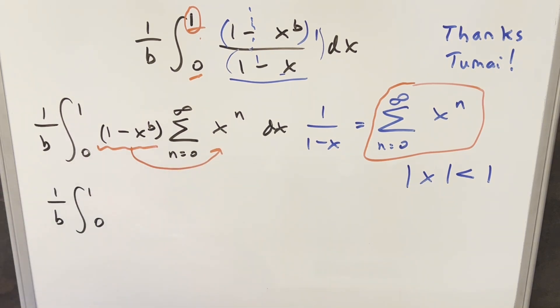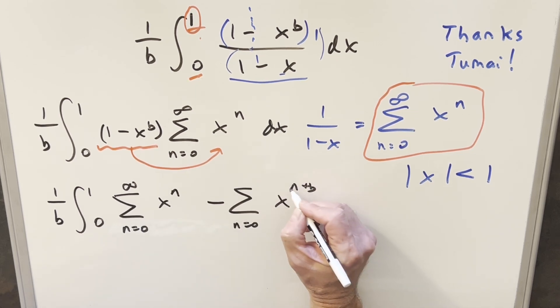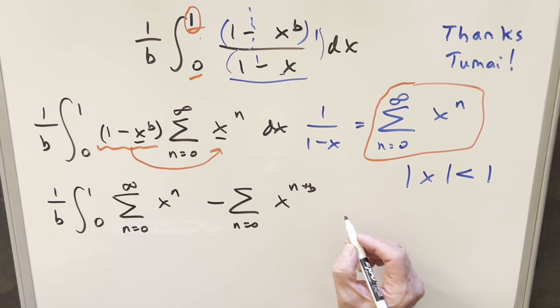So we'll multiply that in, but because we've got the minus sign, let's break it into two sums. So the first one will just be multiplying in the 1, so we'll be getting back x to the n. And then for the second one, we'll have the one with the x to the b multiplied in. So this is going to become x to the n plus b, just with exponent properties.